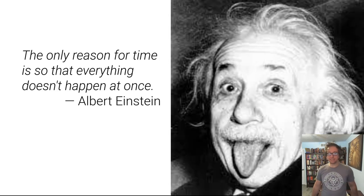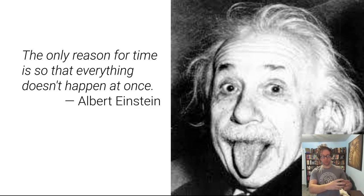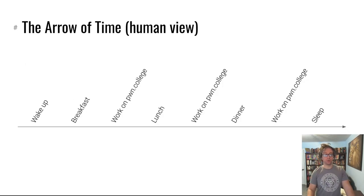As Albert Einstein put it, time is basically a dimension across which we can lay out events to separate them temporally. If you think about time in terms of your own personal experience, taking this class for example, you might wake up, you might eat, work on Pwn College, eat, work on Pwn College, eat, work on Pwn College, sleep. And this is separated along the axis of time, right? So that's your human experience.